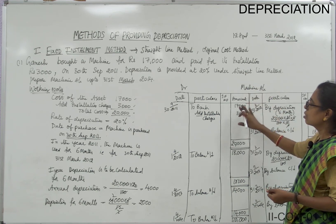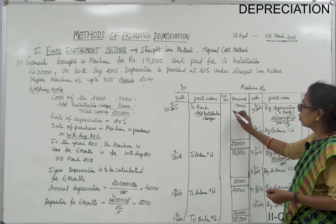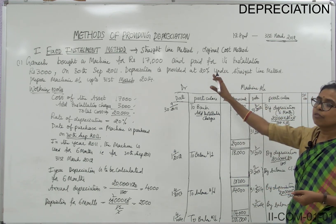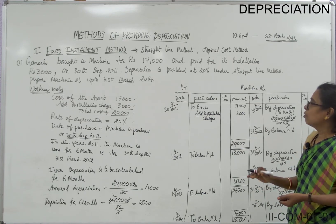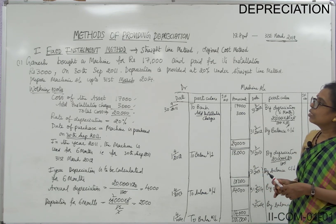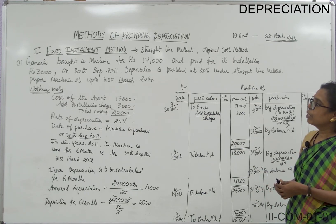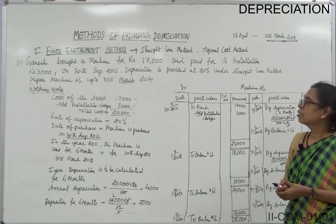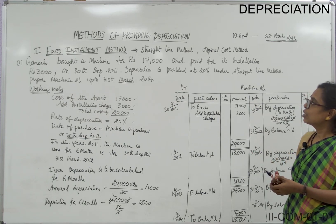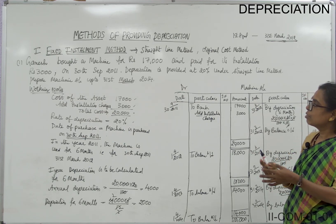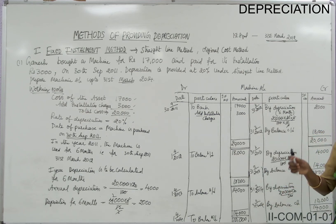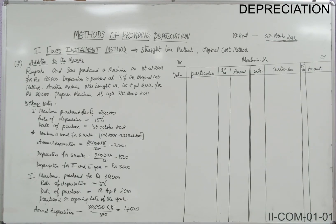This is a simple example with only one machine. Now let's go to another example where there are two machines in the business, and see how it is to be added in the account.